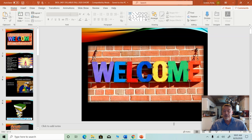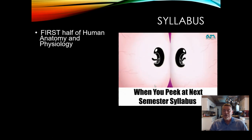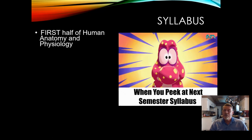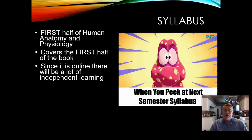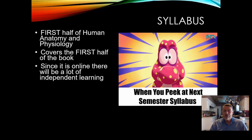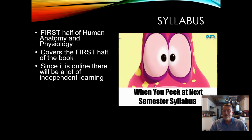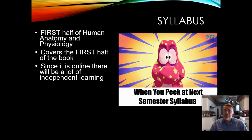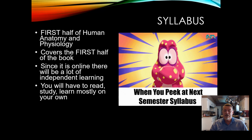Let's take a look at the syllabus in a little more detail. Remember, this is human anatomy and physiology, part one — basically we're just going to be doing the first half of the book. It is an online book, which means you're going to have to spend a lot of time with your computer. You can print it, but you're going to need to spend a lot of time on your own because this is an online independent learning class.